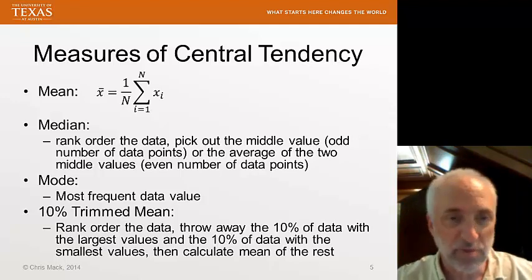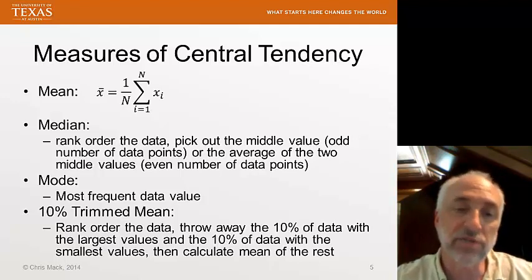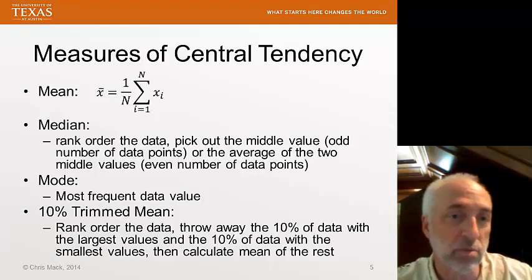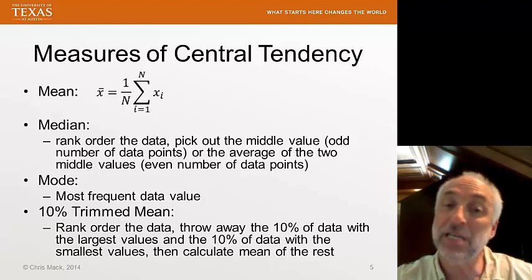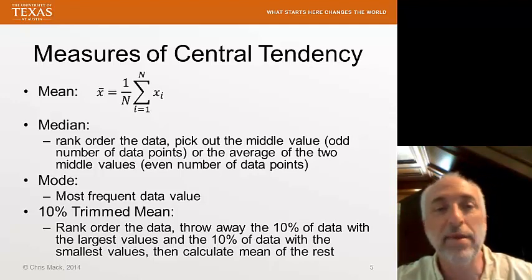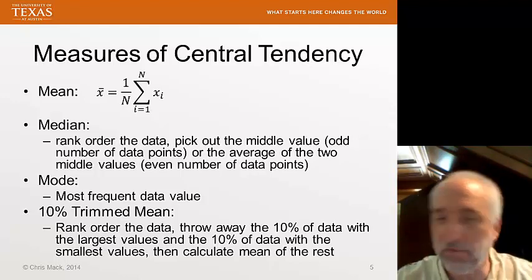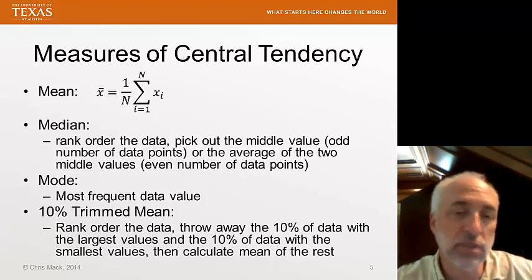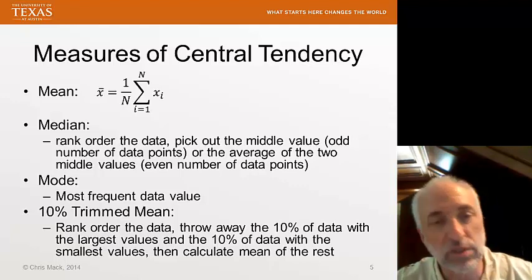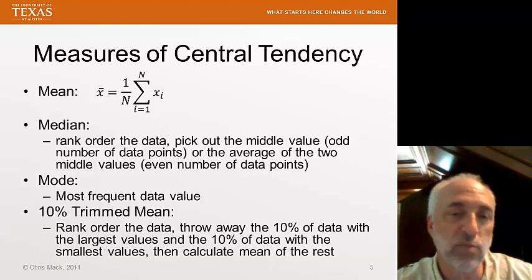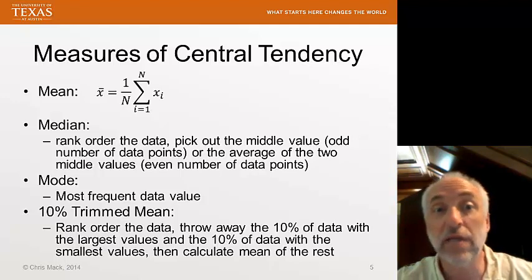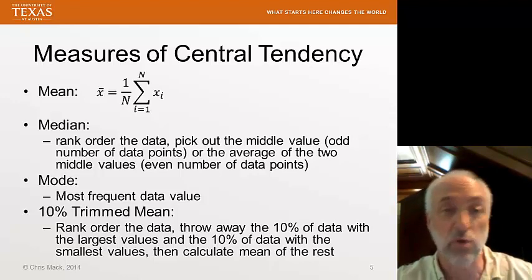What's the value of a trimmed mean versus just using the mean? After all, we're throwing away 20% of our data points. We spend a lot of time and energy and money to collect those data points. Why would we throw them away? Well, every now and then you get a bad data point. One bad data point can completely destroy a mean calculation. If I have one data point that's far, far away from all the others in the middle, then my mean will get shifted a long ways, influenced almost entirely by that one bad data point. The trimmed mean will throw that data point away. In fact, you can have up to 20% of your data being quote unquote bad data.